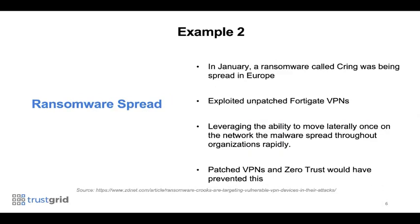The second example is also ransomware — a strain called Cringe that was spreading throughout Europe earlier this year. Similar to the Finastra breach, it happened through a VPN. The brand was different but the result was the same: once the malware infected the system, it spread to other systems. Once again, patching, updating, and zero trust would have prevented this breach and limited the severity of damage as it spread across the continent.